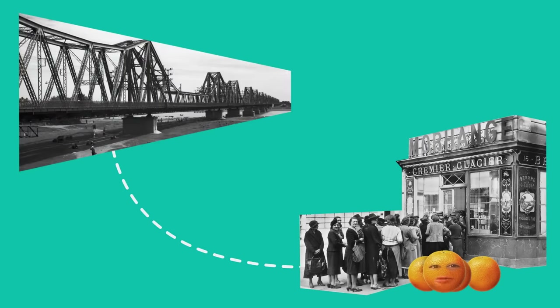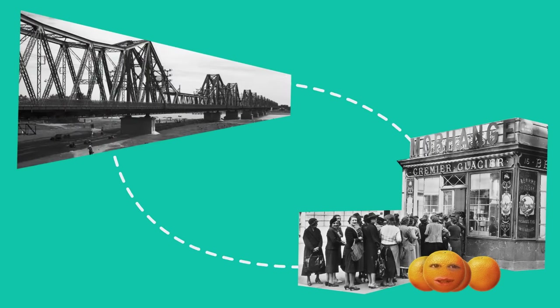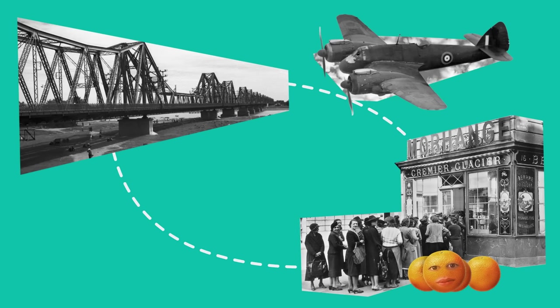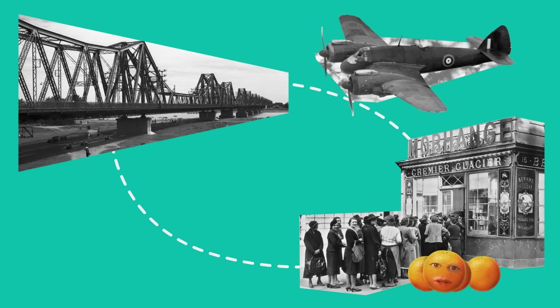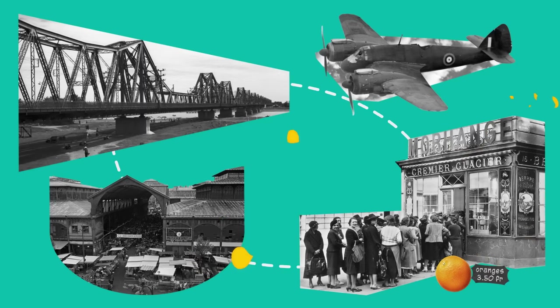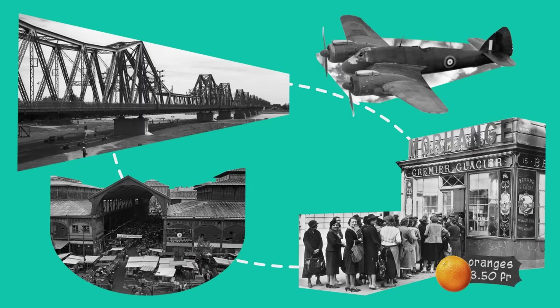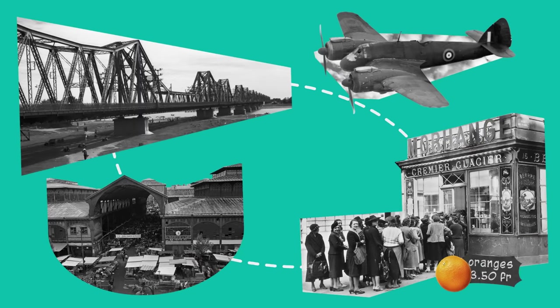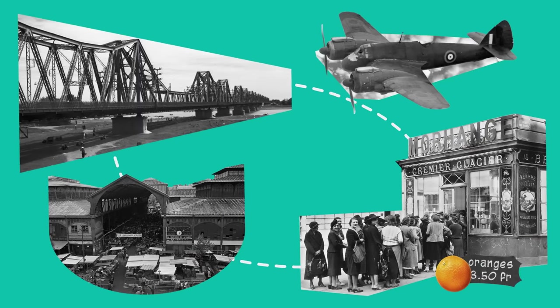For example, there was a direct link between the prices of oranges in Paris and the condition of road and railway bridges. Each bombardment of these objects during the Nazi occupation of France caused problems with the delivery of tender fruits. If prices were rising, then the missions of the Allied bombers were proving successful.